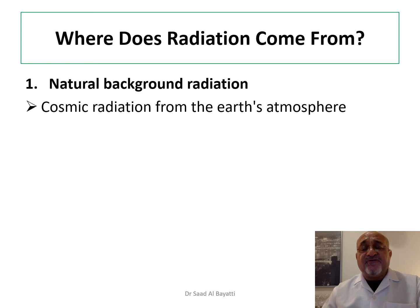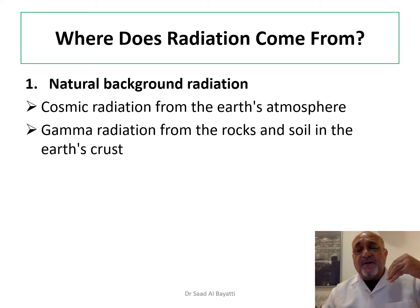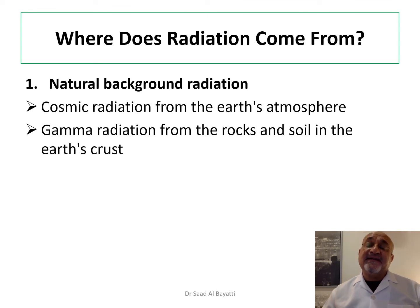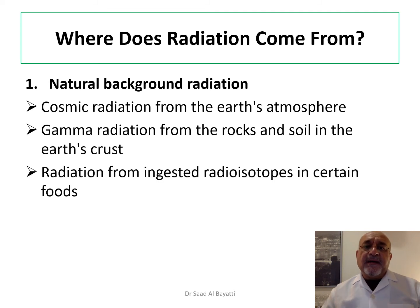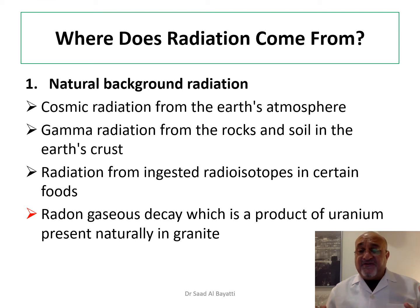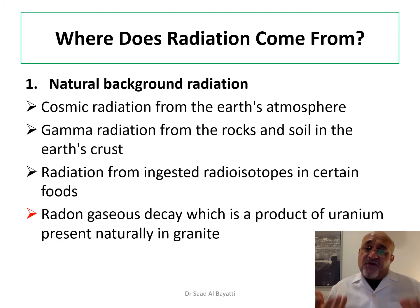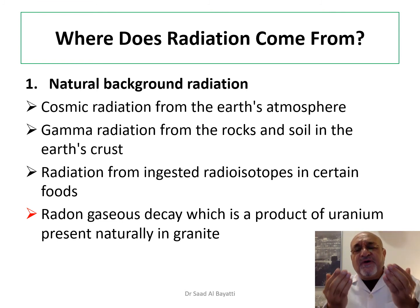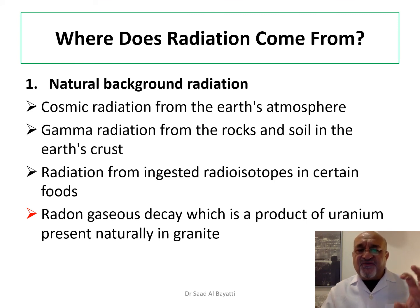Radiation comes naturally from natural background radiation, including cosmic rays from the earth's atmosphere, gamma radiation from rocks, soil, and the earth's crust — Brazil and India are famous for this. It also comes from ingested radioisotopes found in certain foods, and from radon gaseous decay, which is a product of uranium naturally present in granite. So radiation naturally comes from outer space — with the sun being the major source — from soil, through ingestion, and through inhalation. Most of these are gamma, alpha, and beta particles, with gamma being the main source of ionizing radiation.